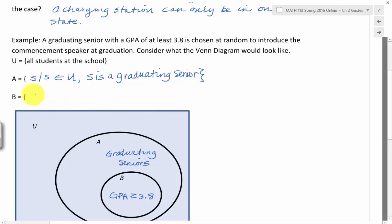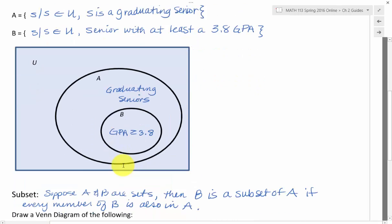And then B is going to be S such that S is an element of the universe and is a senior with at least 3.8 GPA. And when we define it that way, then the only students who are even possibly able to be in set B have to already be seniors. And so that helps us ensure that this B circle really is within the A circle.